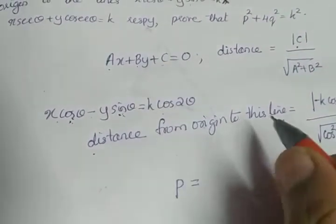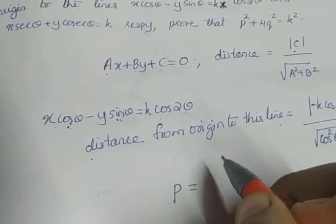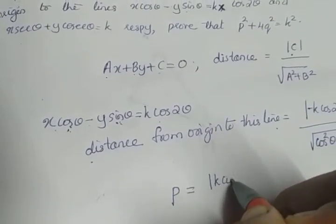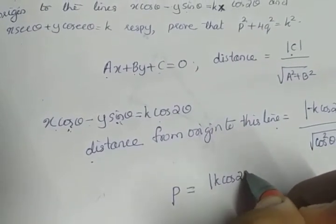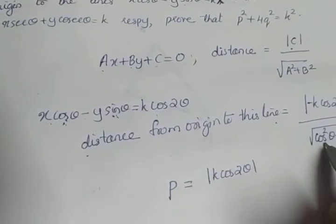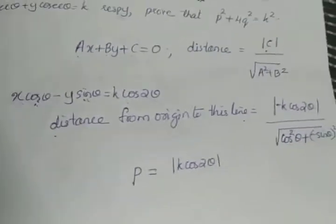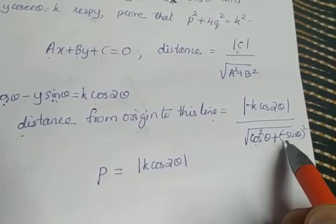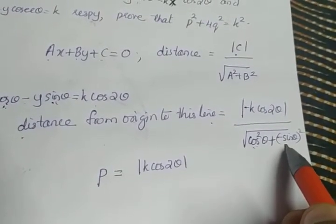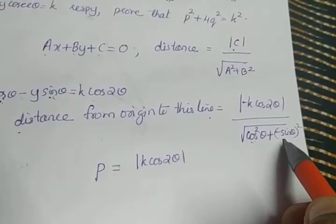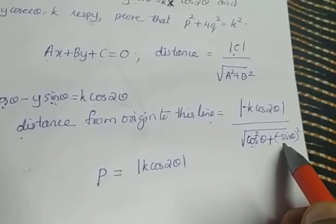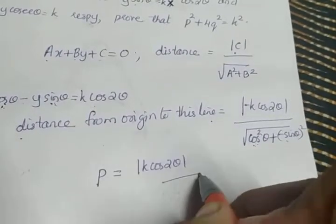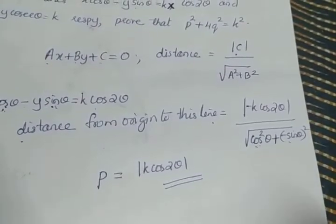P equals |−K cos2θ|, which is |K cos2θ|. The denominator is cos²θ + sin²θ, which equals 1, and √1 = 1. So P = |K cos2θ|.